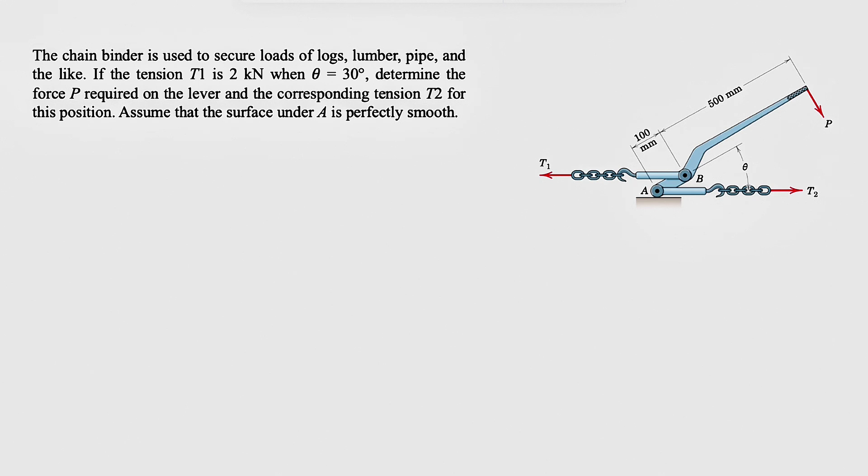So as always, we're going to start with the free body diagram for this part of the system. We have the force P applying on one end, T1 in here, and on the contact point A, since we do not have any friction, we only have a normal force NA. We're going to have the tension T2 in here, and the force P, which is one of the unknowns we need to figure out.